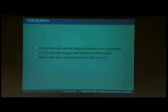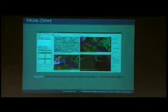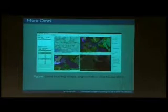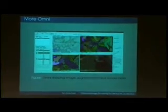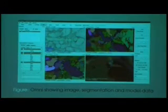Omni displays that data to users in 2D and 3D for them to view and edit. Here's a screenshot of Omni doing just that. Over here we have the raw image data, which we call the channel data; here we have the segmentation data; and here are the 3D meshes.